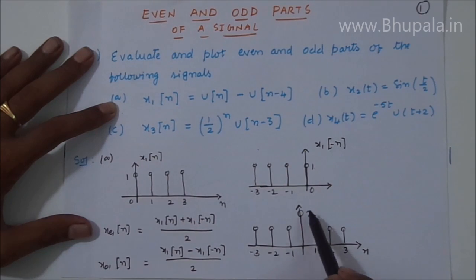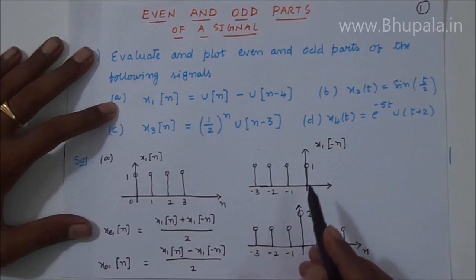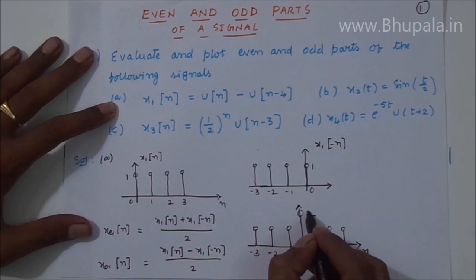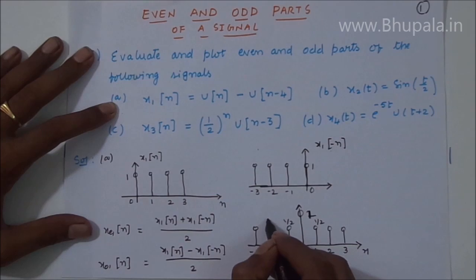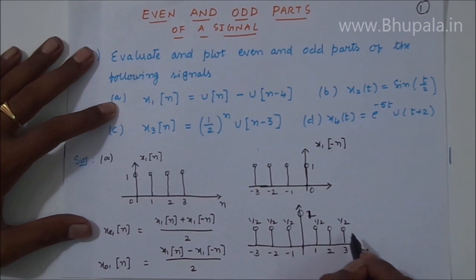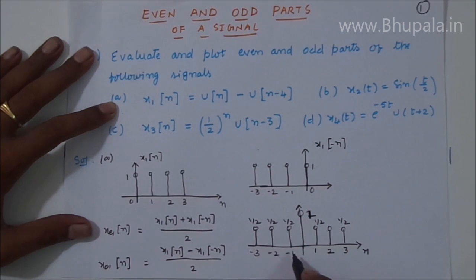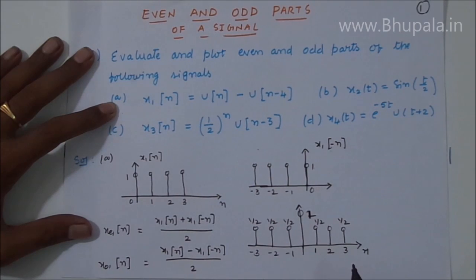After adding, the amplitude at zero is two, but since we are dividing the whole signal by two, this amplitude becomes one and the other amplitudes become one-half. This is the even part of the signal xe1[n], and looking at it you can confirm it is indeed symmetric — an even signal.